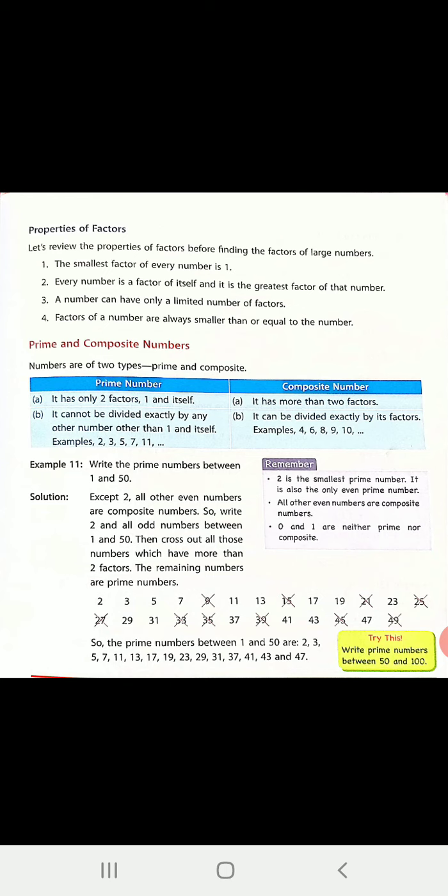Here you have an example: write the prime numbers between 1 and 50. So for that purpose, what we are doing is we will write all the numbers from 1 to 50. After listing them, we keep in mind all the even numbers.